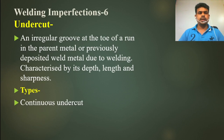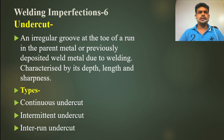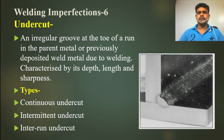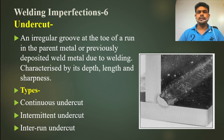Basically, undercut has 3 types: continuous undercut, intermediate undercut, and interrun undercut. You can see on the right side — this is the fillet weld, and here there is a sharp edge with some depth and some length.